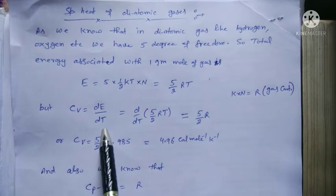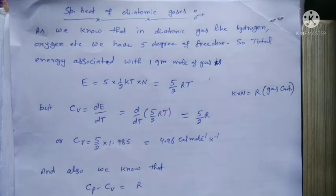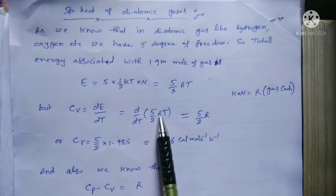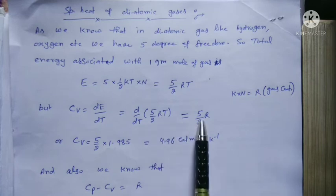But Cv is equal to dE/dT, which is equal to d/dT of (5/2)RT. (5/2)R is constant, so we take it out, and dT/dT cancels. What remains is (5/2)R.